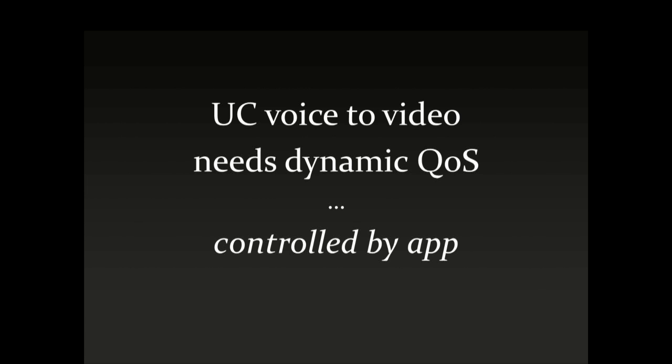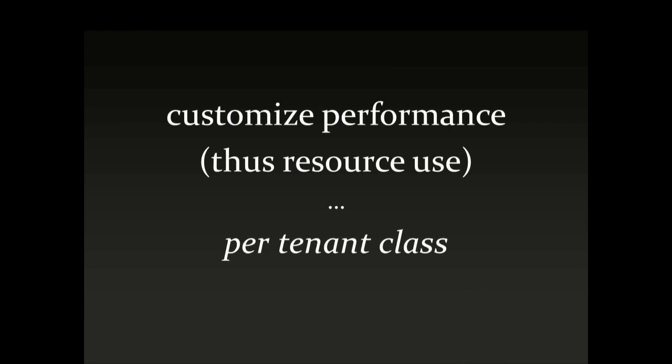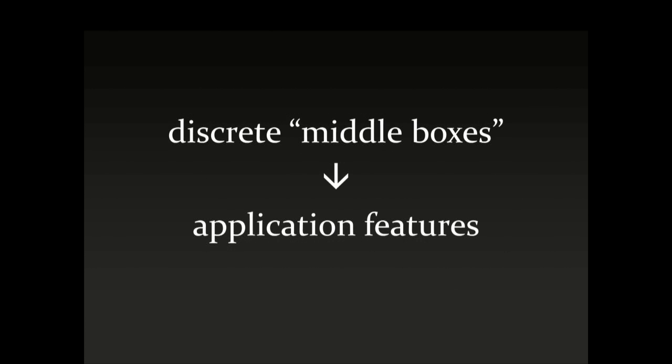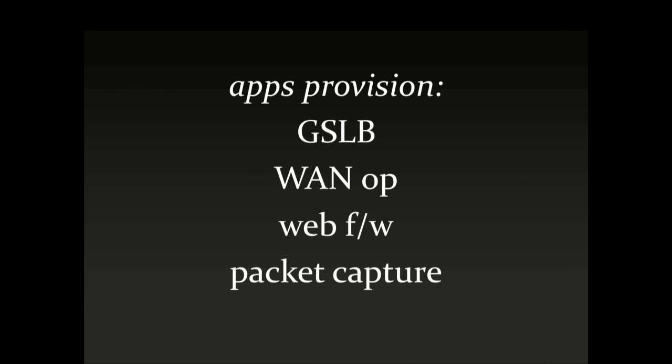It needs to switch from voice to video, and to do that effectively we need a dynamic re-plumbing of QoS in place right now — but that's controlled by the application, not by something in the infrastructure itself. You might also think about customizing the performance of an application based on who is using it or based on the tenant it's located next to, altering resource use on demand, controlled by the application. What used to exist as discrete middle boxes are now becoming application features — the applications themselves provision global server load balancing, WAN optimization, a web application firewall, or even packet capture for on-demand analysis.